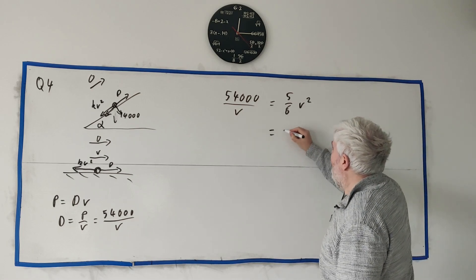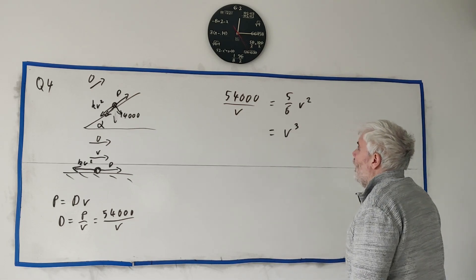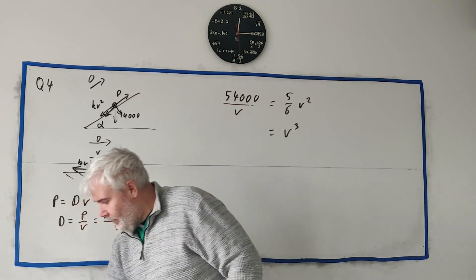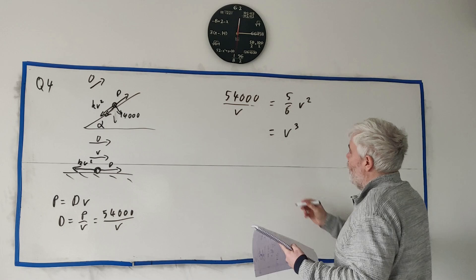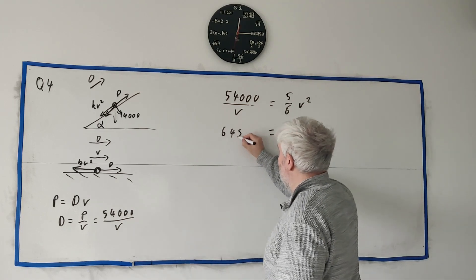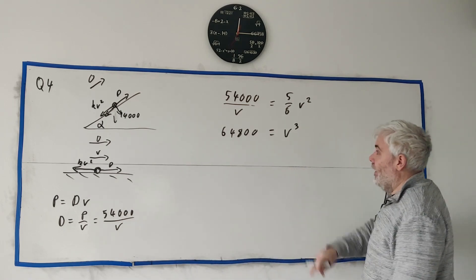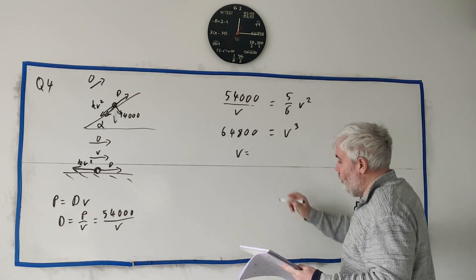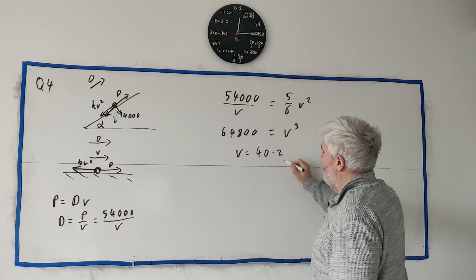6 times this. Divided by 5. I'll have to go to my notes. At 64,800. Get the cube root of both sides. We get V equals 40.2.